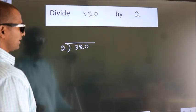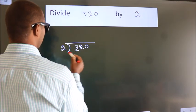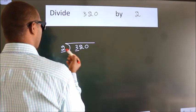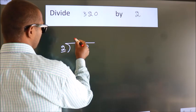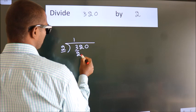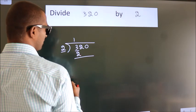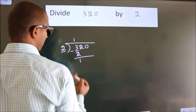Next. Here we have 3, here 2. A number close to 3 in 2 table is 2 ones 2. Now, we should subtract. We get 1.